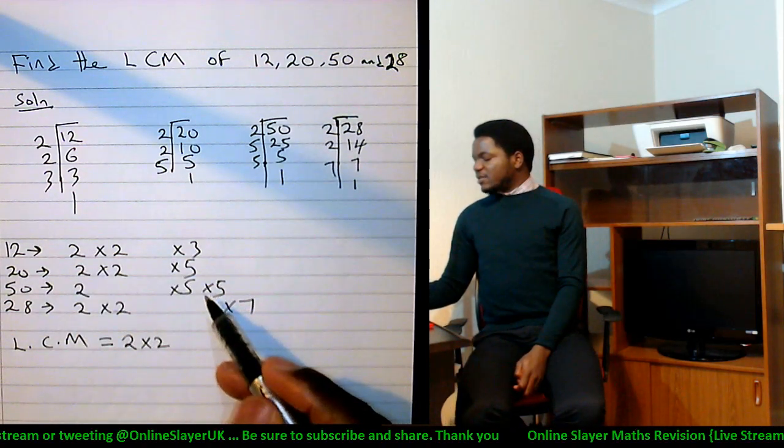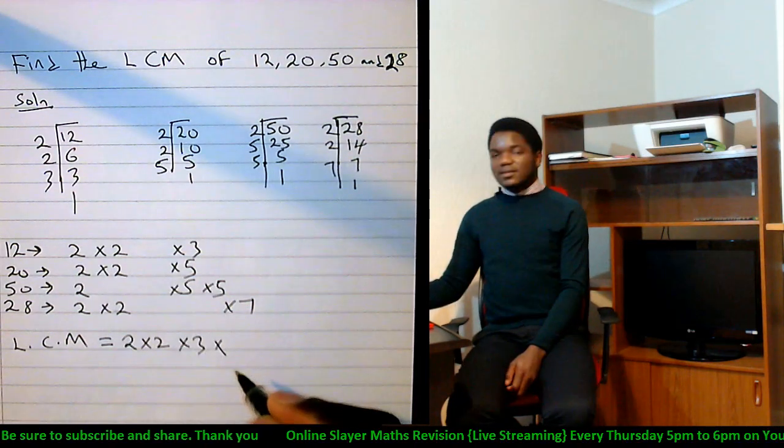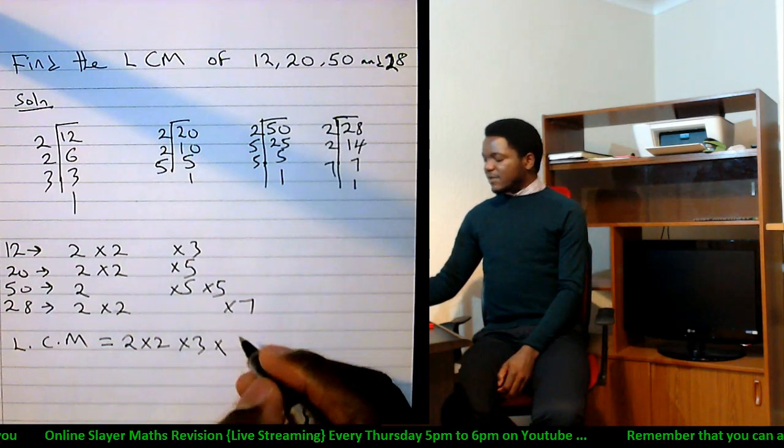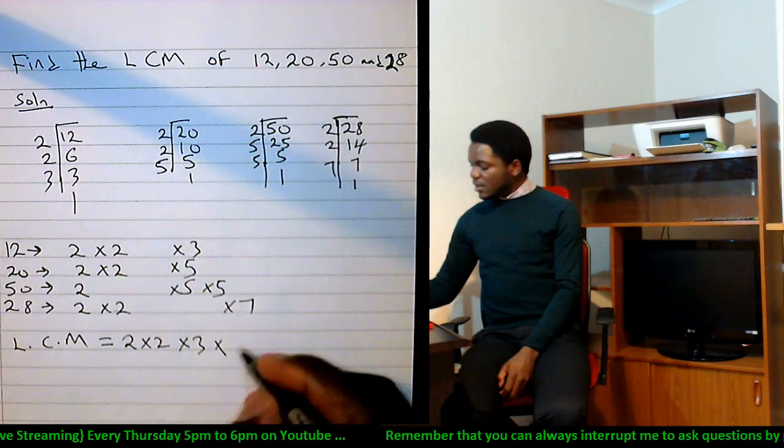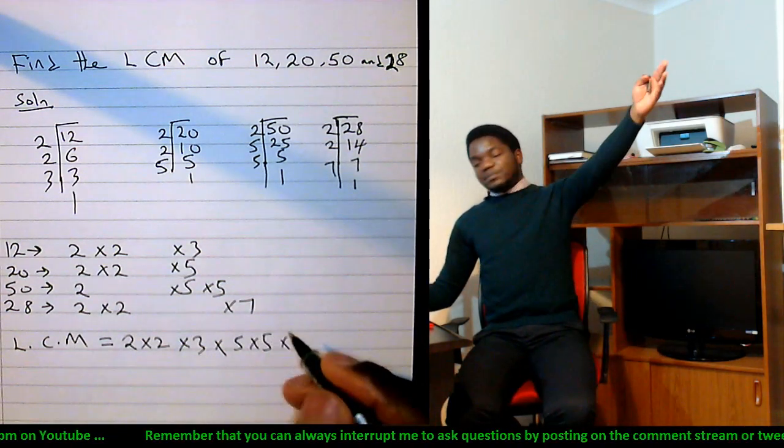Where do you have the highest congregation of threes? You've got just one place, so just write three, go on with it. How many places have I got the fives? Well, it's just five times five, because that's the only highest congregation of fives. You've got five times five, and then you've got just one seven appear in there, so seven.